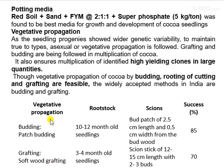After selection of mother palm, the next step is planting. First, selection of potting media: red soil, sand, and FYM at a 2:1:1 proportion plus superphosphate 5 kg per ton was found to be the best media for growth and development of cocoa seedlings. As seedling progeny ensures wider genetic variability, to maintain uniformity, vegetative propagation is followed. Grafting and budding are followed in multiplication of cocoa, ensuring multiplication of identified high-yielding clones in large quantities. Though vegetative propagation by budding, rooting of cuttings, and grafting are feasible, the widely accepted methods in India are budding and grafting.